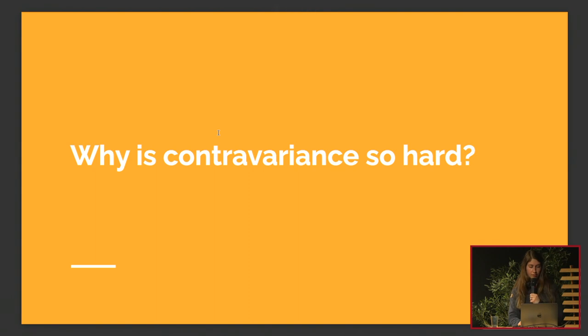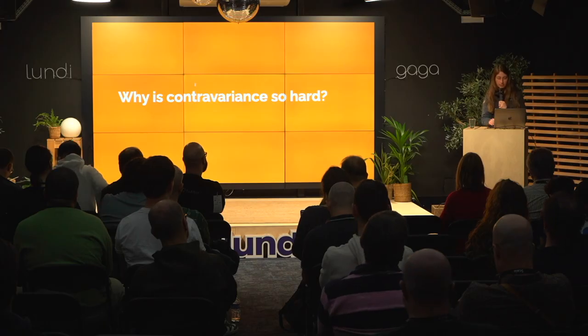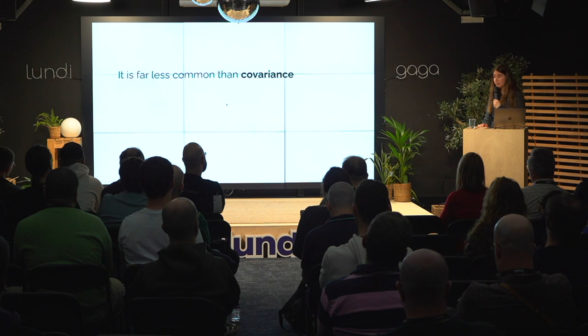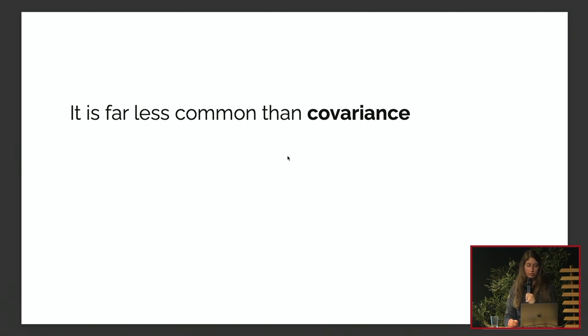Why is contravariance so hard then? First, it's far less common than covariance. Covariance appears early in your Scala journey — List is covariant, Option, Either, and Try are all covariant. You may spend a few years writing Scala without ever needing to use contravariance yourself, though you might use it unknowingly through libraries.